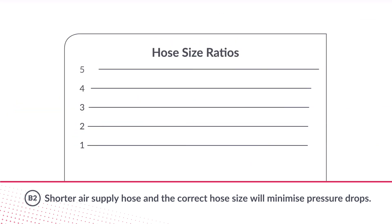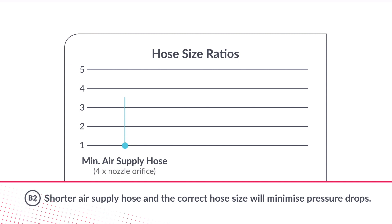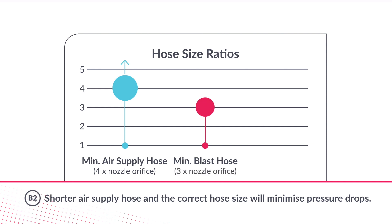The minimum diameter for your air supply hose should be four times the blast nozzle orifice. For the blast hose, the minimum diameter should be three times the blast nozzle orifice.